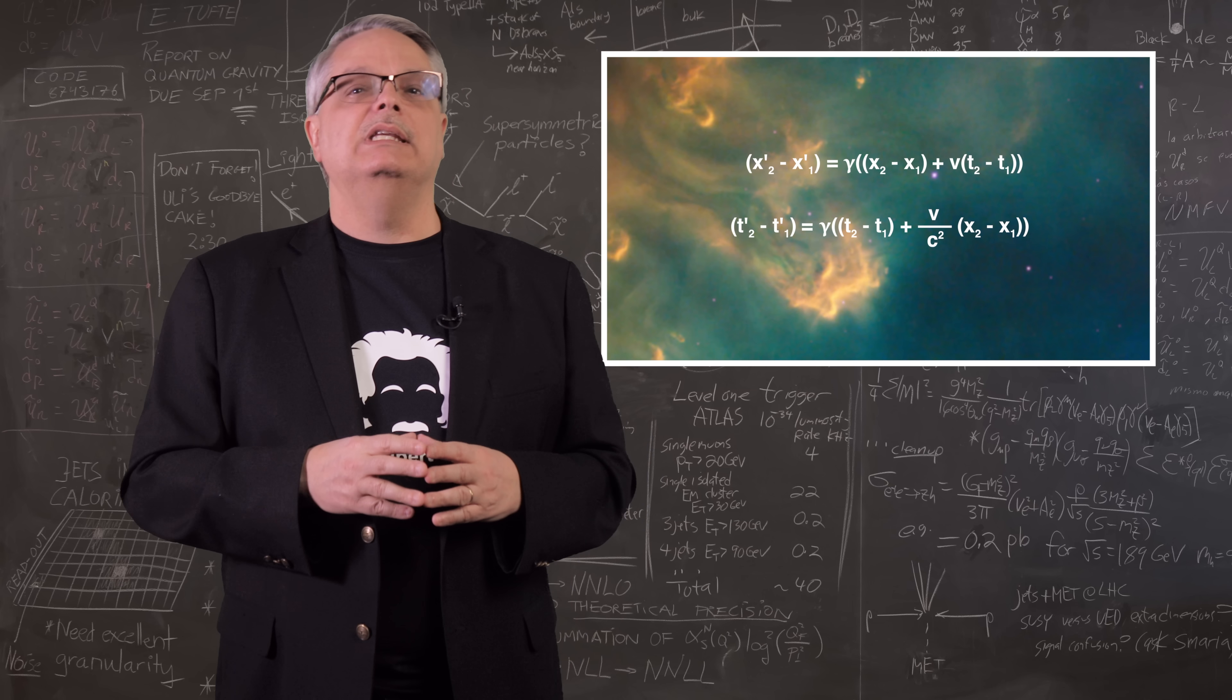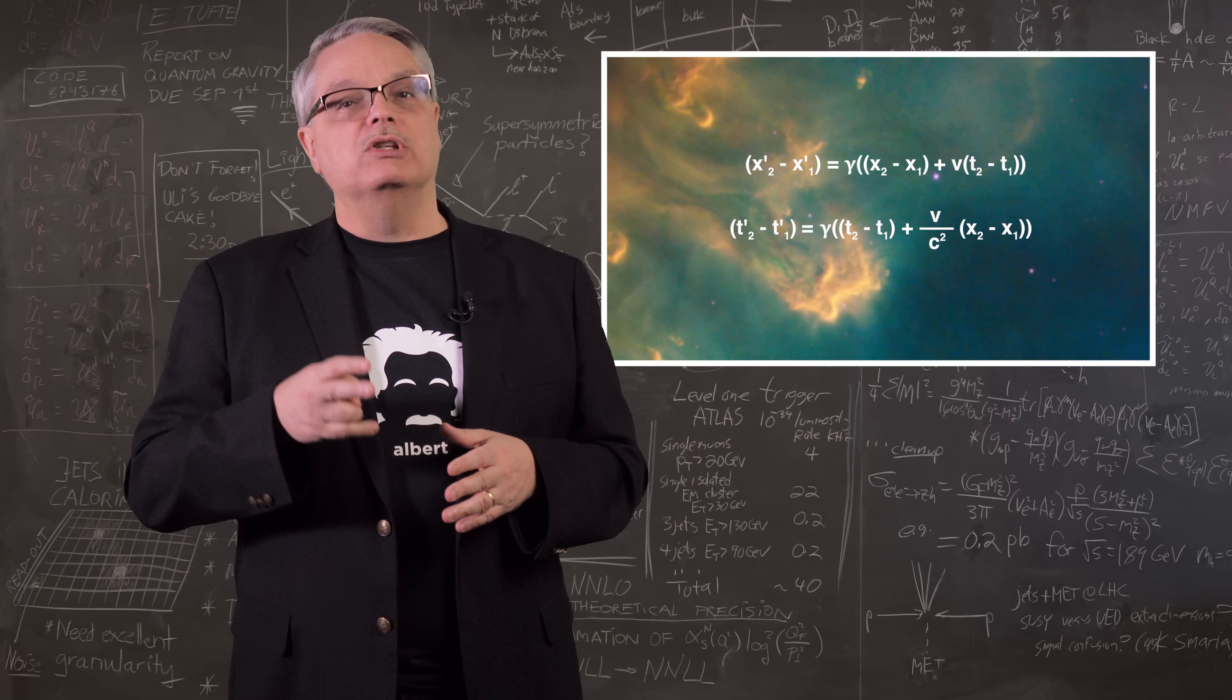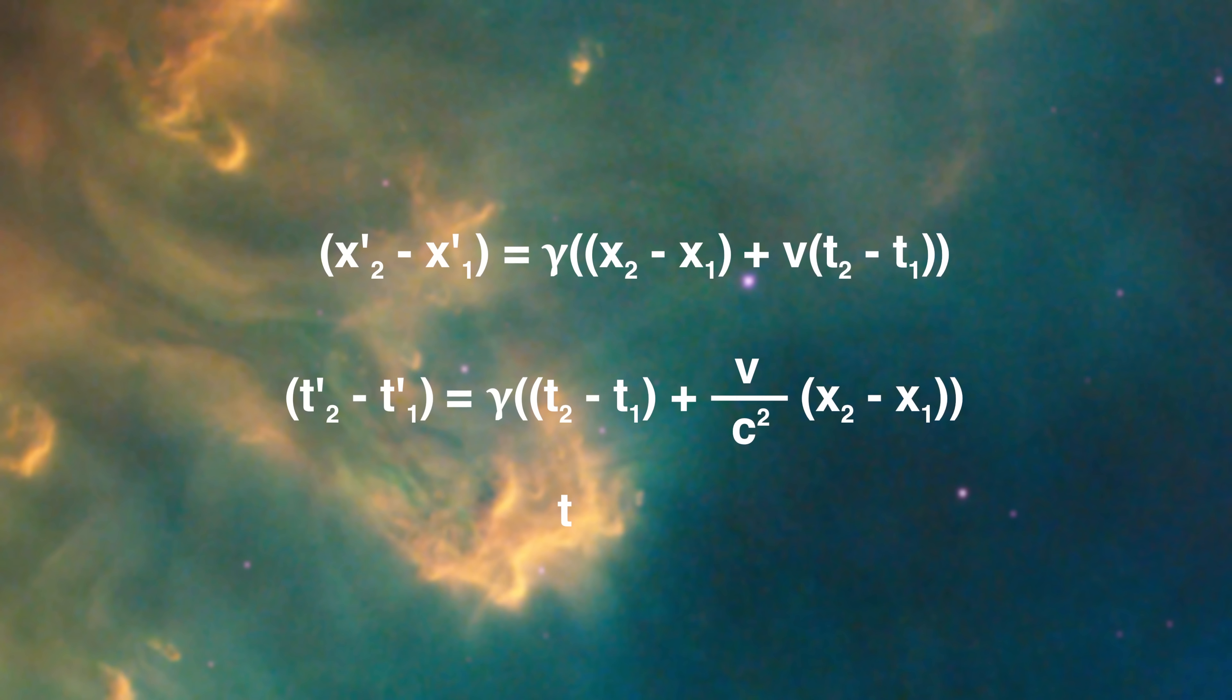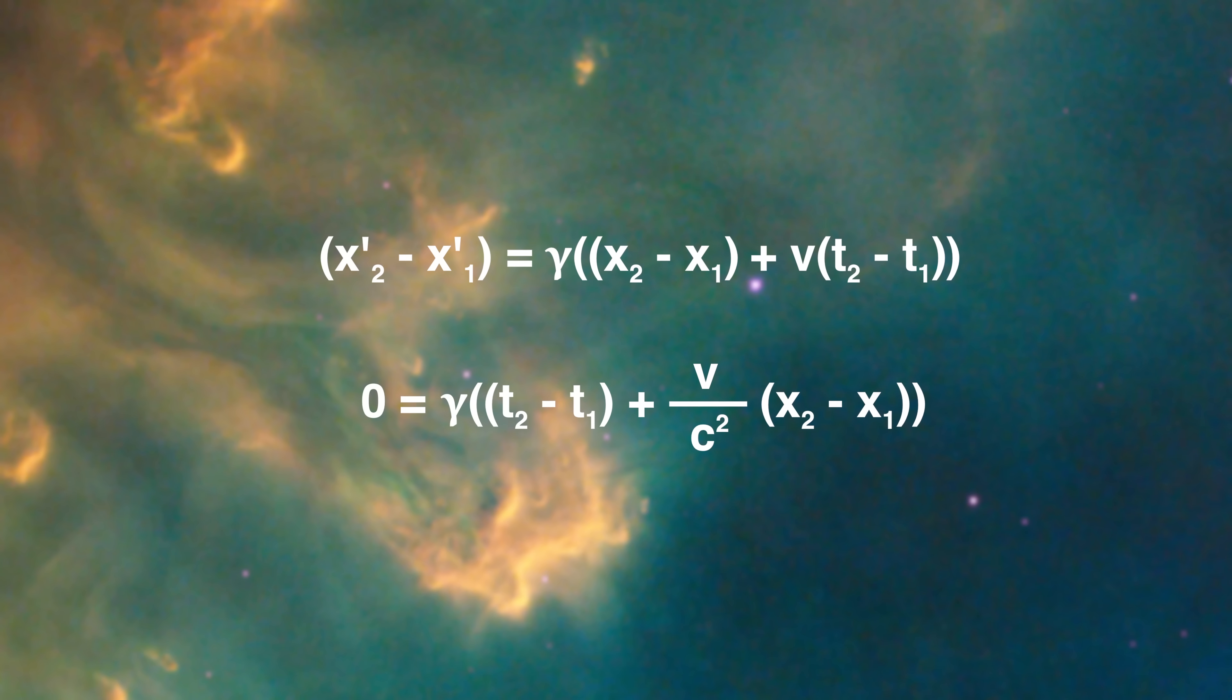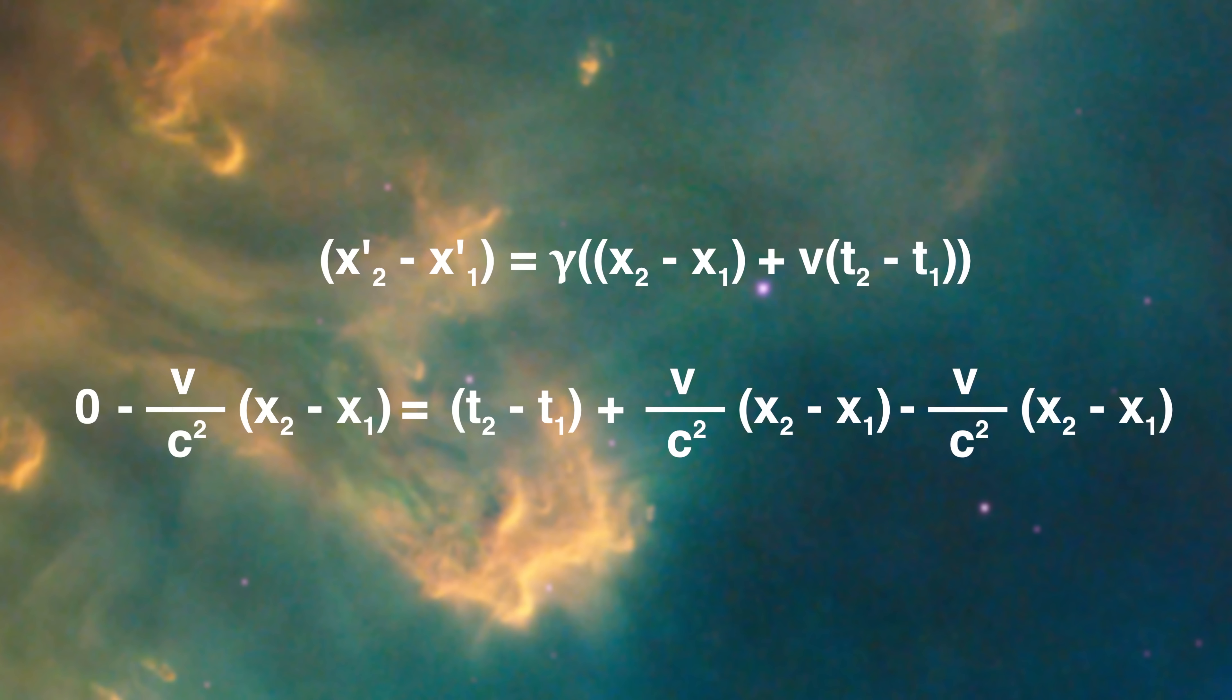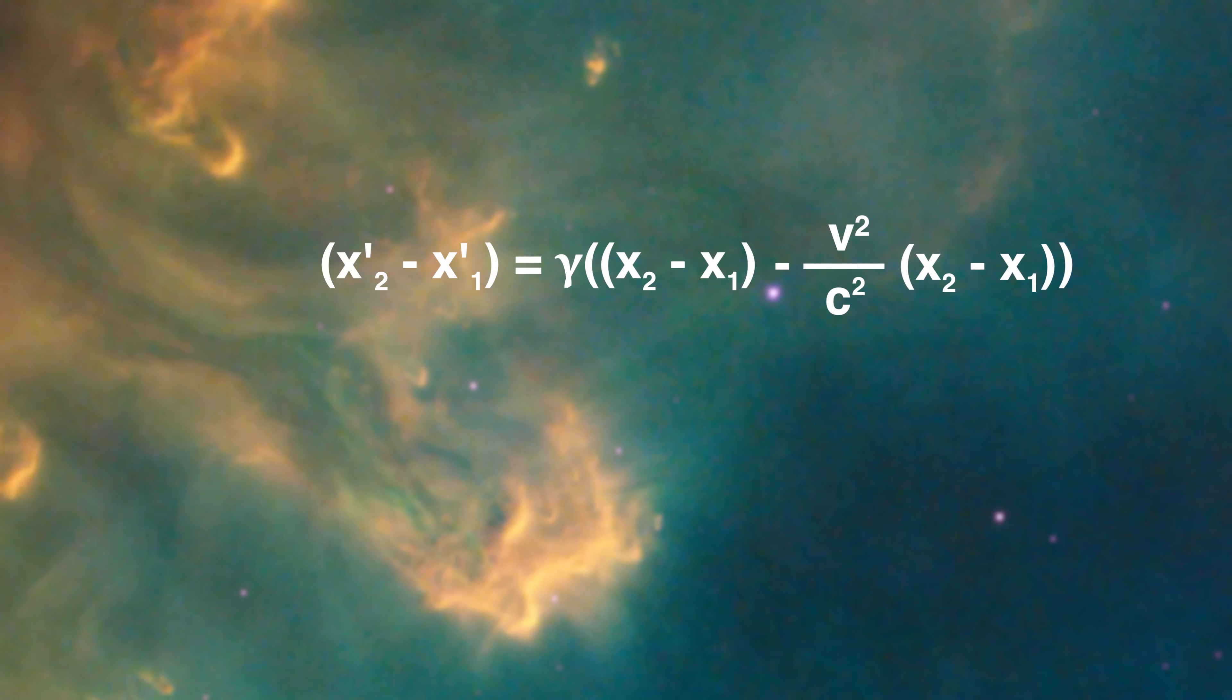So remember what we need to do. We need to have the primed observer find the location of the two ends at the same time. And that means that t2 prime equals t1 prime, which means that the left hand side of the bottom equation is zero. We want to get rid of the times and only have locations. So we can solve for t2 minus t1 and get this here. And we can take this and put it in the top equation and we get this equation that we see here.